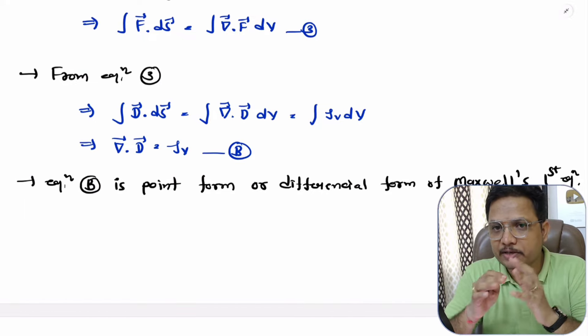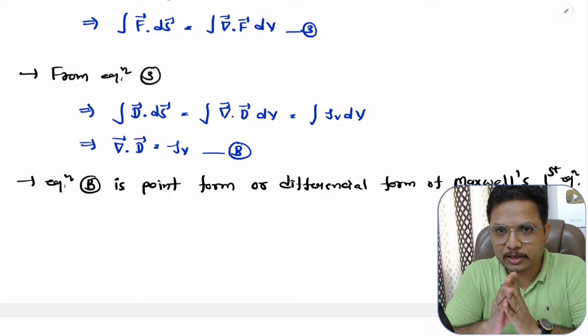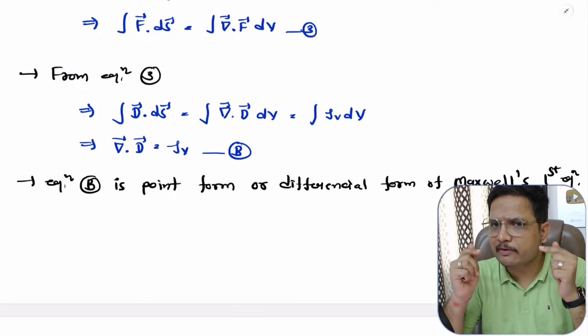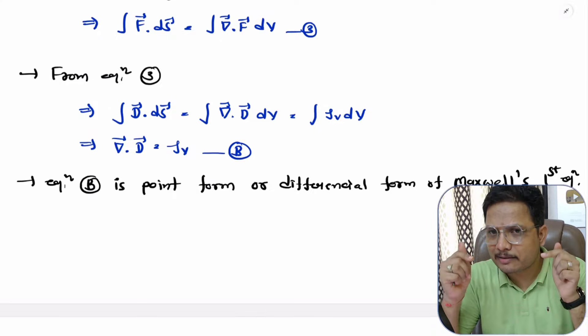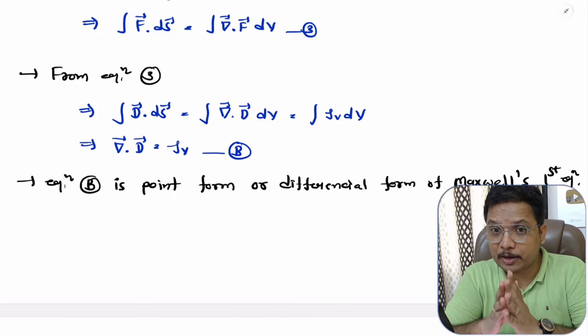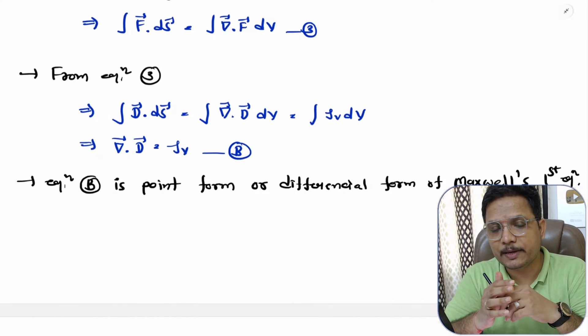So, this is how one can derive Maxwell's first equation in point form and differential form. I hope you have understood this. If there is anything you would like to share, just note it down in the comment section — I will be happy to help you. Thank you so much for watching this video.